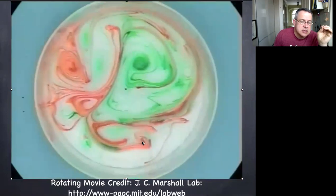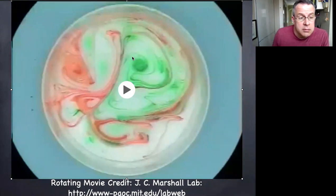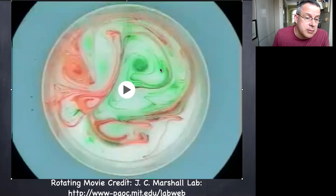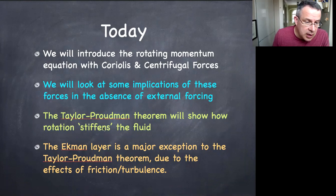First we have to set up the equations of motion relevant for a rotating tank, and indeed they're quite similar to the equations of motion for fluid on a rotating sphere. From those equations in the second short video, we'll do a couple of applications to understand what's going on. We'll introduce the rotating momentum equations and look at implications in the absence of external forcing. The Taylor-Proudman theorem, the Ekman layer, and inertial oscillations are some things we're going to talk about using these equations of motion.